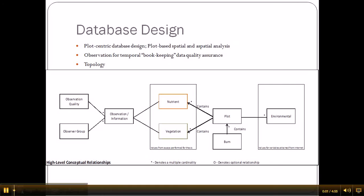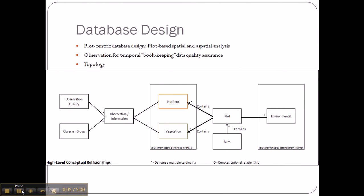This is the database design I created for the data you just saw. The important features of this design are: first, it is plot-centric. The three important data types I will be analyzing for my thesis — the soil assay data, the vegetation data, and the environmental inputs — all connect to a plot attribute table, which represents the treatment plots. All analysis will take place by comparing treatment plots to one another.